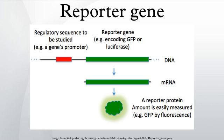The GUS gene has been commonly used in plants, but luciferase and GFP are becoming more common. A common reporter in bacteria is the E. coli lac-z gene, which encodes the protein beta-galactosidase. This enzyme causes bacteria expressing the gene to appear blue when grown on a medium that contains the substrate analog X-gal. An example of a selectable marker which is also a reporter in bacteria is the chloramphenicol acetyltransferase gene, which confers resistance to the antibiotic chloramphenicol.